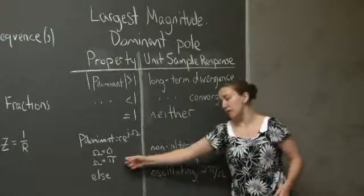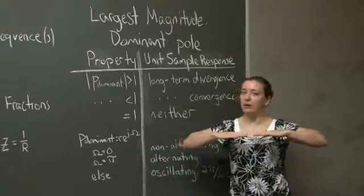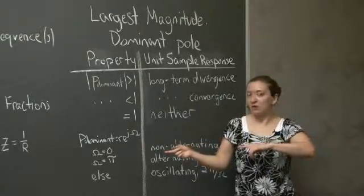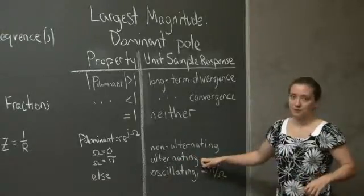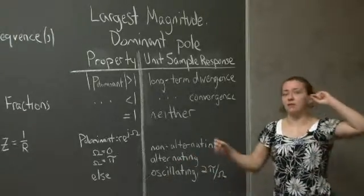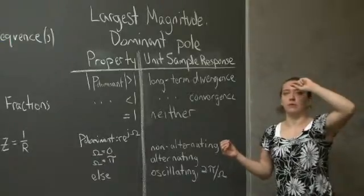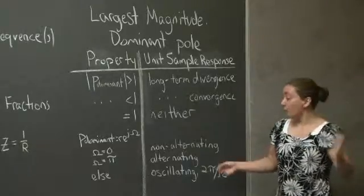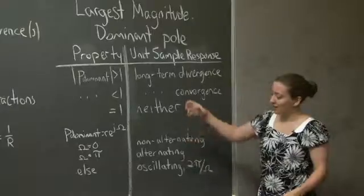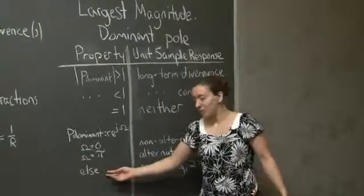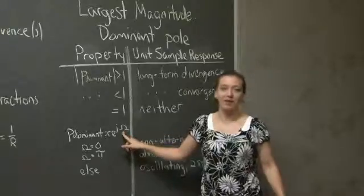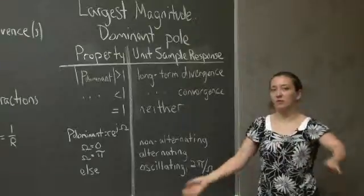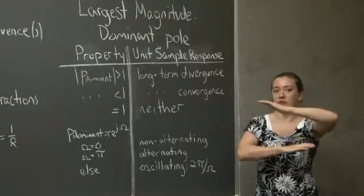If your dominant pole is real and negative, it's still on the real axis but its value is negative, so in polar coordinates it has an angle of pi associated with it. This means you get alternating behavior — your unit sample response is going to jump across the x-axis at every time step. This is also equivalent to having a period of 2. The other situation you can run into is that the angle is neither 0 nor pi, and at that point you're talking about oscillatory behavior or a sinusoidal response that retains its edges at the envelope of your function.